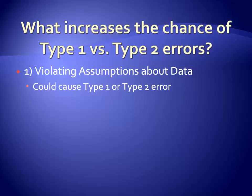The first factor that could increase your chance of making a type 1 or type 2 error relates to violating the assumptions associated with the data analytic strategy being used. If this is done, you could either find something that isn't really there or fail to find a relationship that really does exist. In this course, we will discuss three types of statistical analyses: chi-square tests, correlation, and regression. Each of these analyses is associated with its own set of assumptions about the distribution of the data. If you run an analysis that is not appropriate for the scale of measurement or the shape of the distribution, you would be violating the assumptions of the test and would not be able to interpret the results.